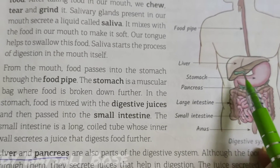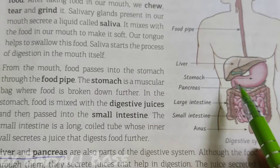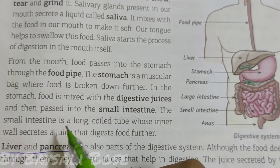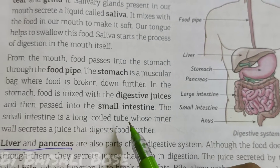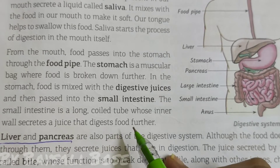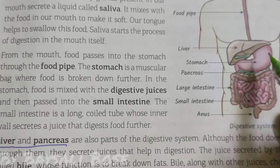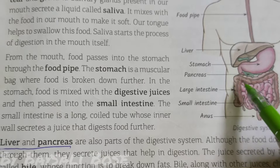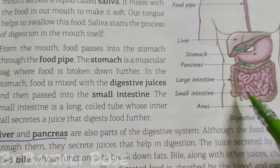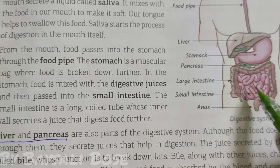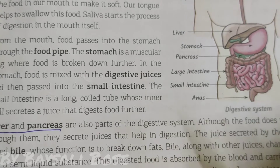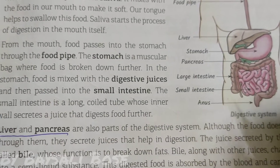After digestion is done in the stomach, the food passes to the small intestine. The small intestine is a long coiled tube whose inner wall secretes a juice that digests food further. In the small intestine, another digestive enzyme is secreted that breaks food into simpler substances.